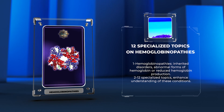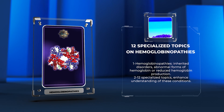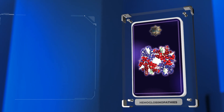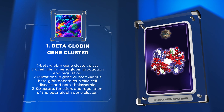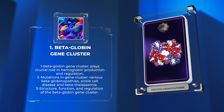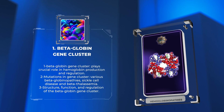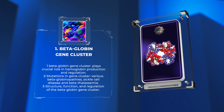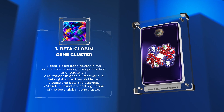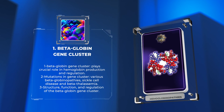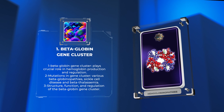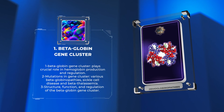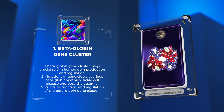Let's delve into the 12 specialized topics that will enhance your understanding of these conditions. The beta-globin gene cluster, located on chromosome 11, plays a crucial role in hemoglobin production and regulation. It consists of several genes, including the beta-globin gene itself and other regulatory elements. Mutations in this gene cluster can lead to various beta-globinopathies, such as sickle cell disease and beta-thalassemia. We will explore the structure, function, and regulation of the beta-globin gene cluster in detail.